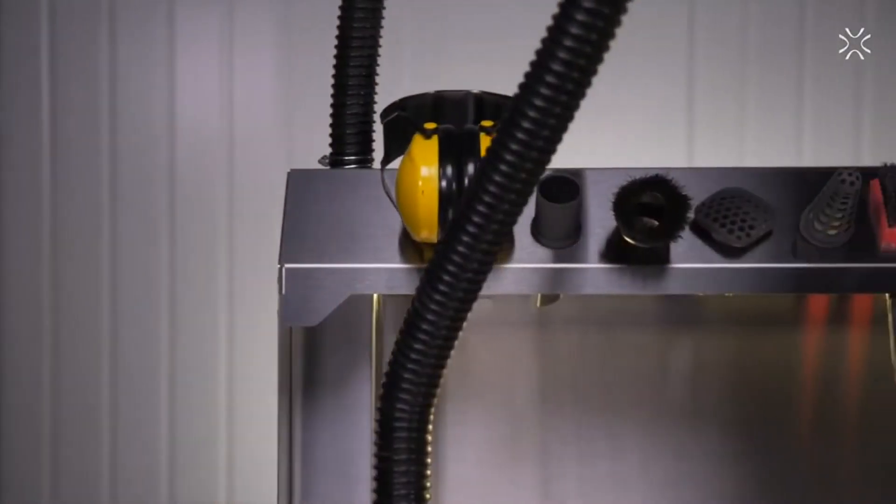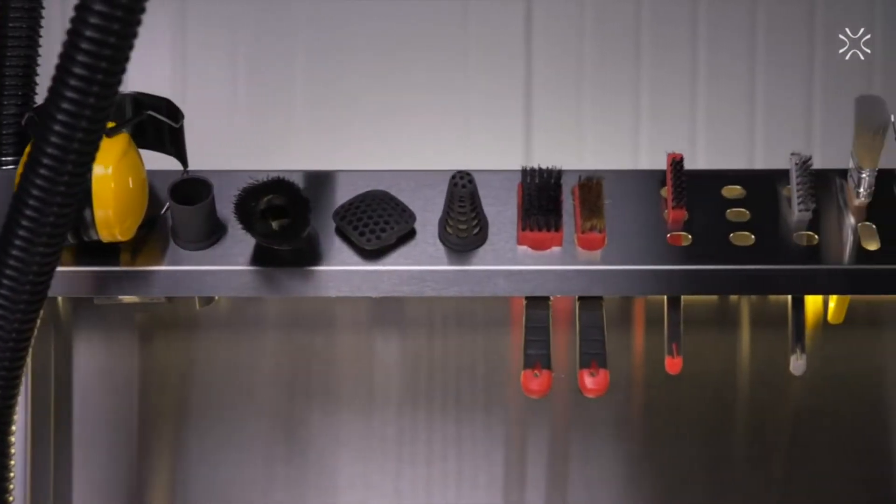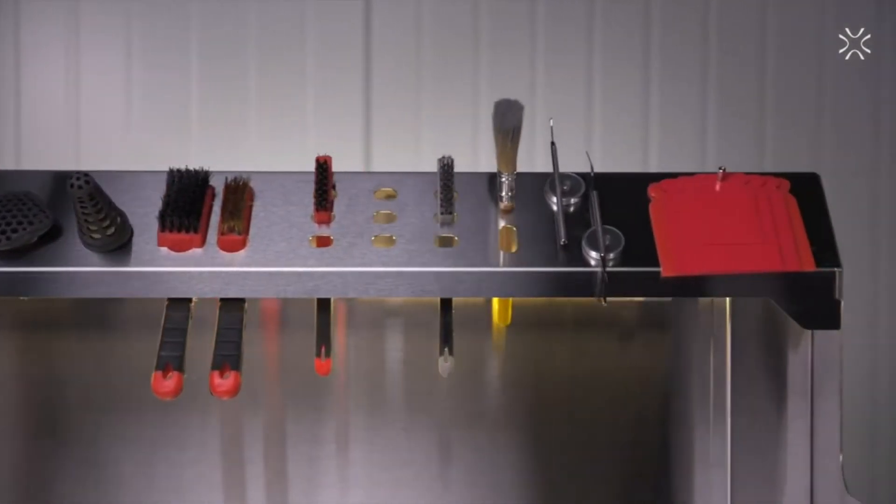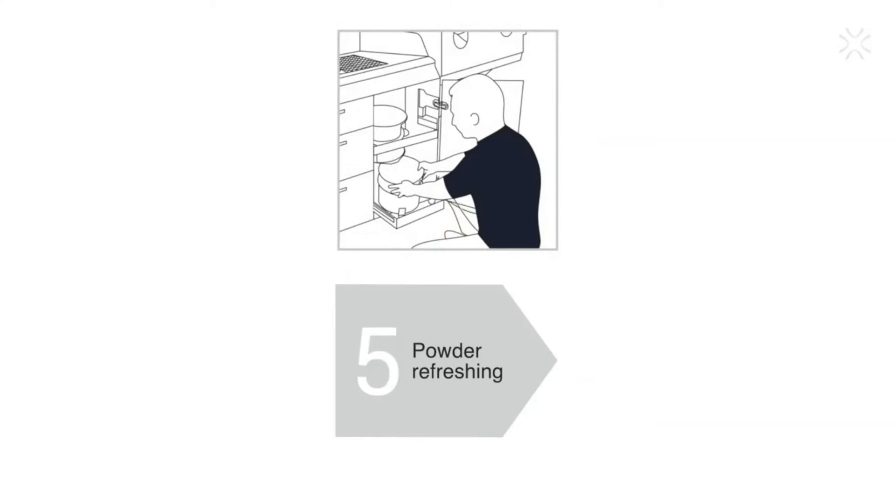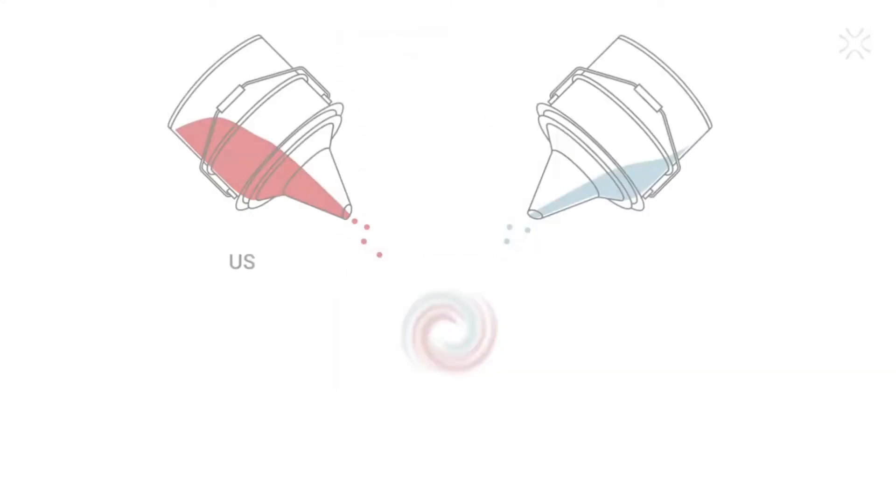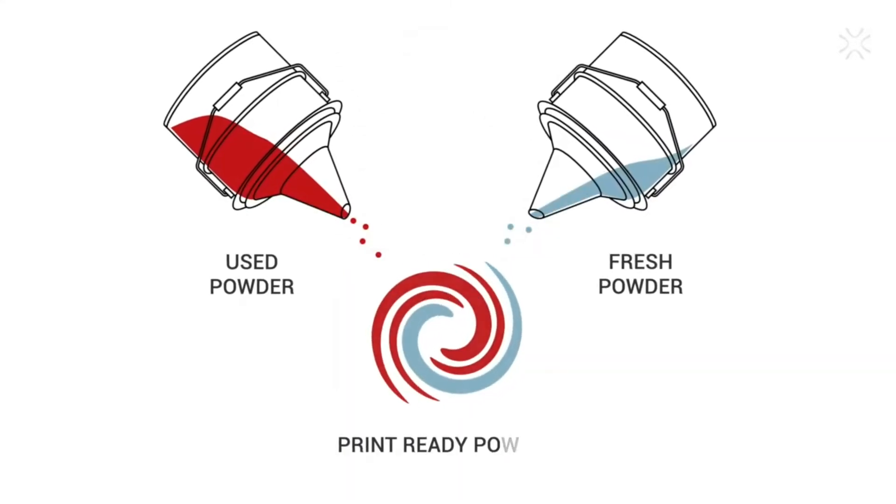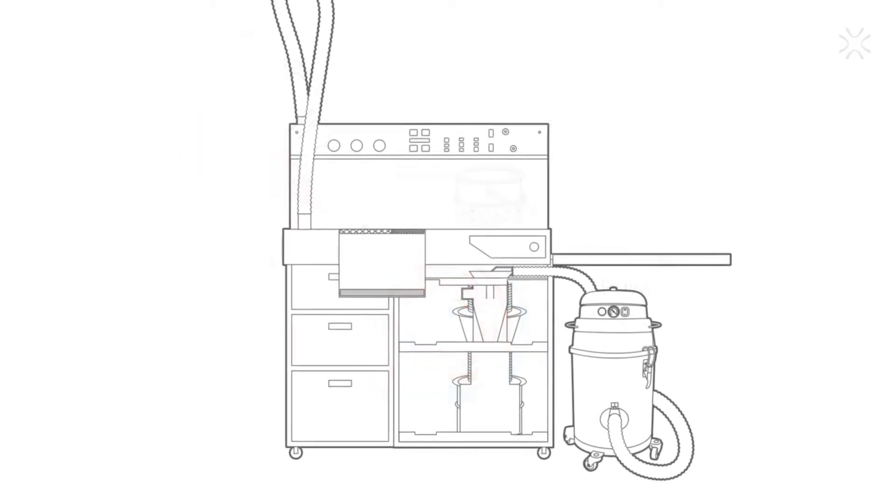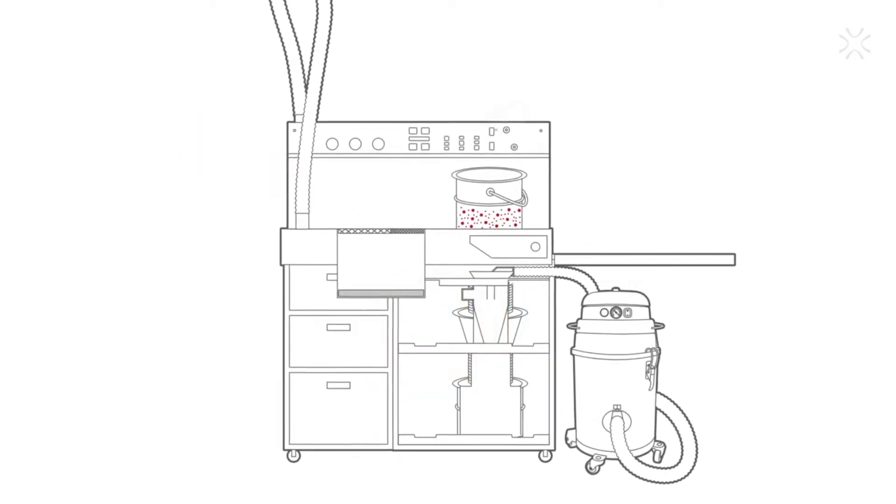As you can see, each stage of the process can be performed within one work area. Everything important is located close to each other—that is the real ergonomics of SLS. But this is not the end. The PHS has one more key function: with the PHS you can refresh and recycle unused powder.